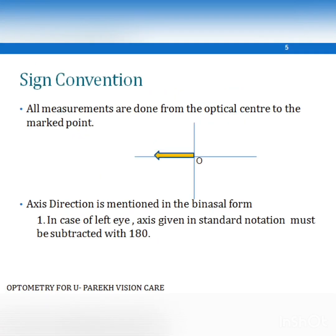Now let's understand the sign convention in prismatic lenses. All measurements are done from the optical center to the marked point. The axis direction is usually mentioned in binasal form. In case of the left eye, when the angle is more than 90 degrees — for example, 130 degrees or 140 degrees — it needs to be subtracted from 180 degrees and then noted.